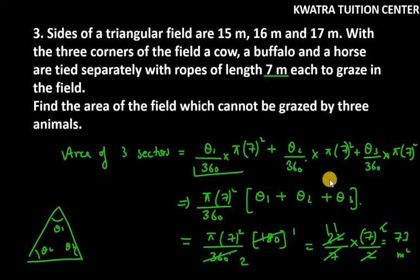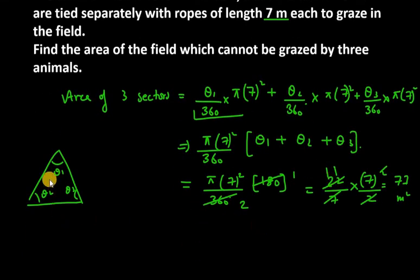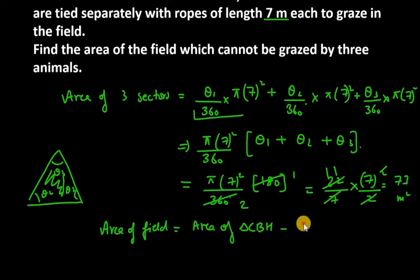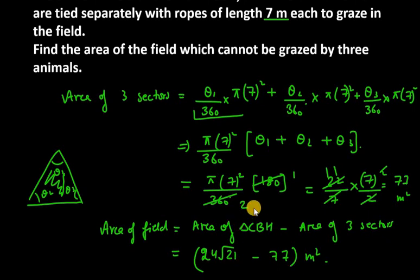Now we have to find area of the field which cannot be grazed. It is equal to area of triangle CBH minus area of 3 sectors. So area of triangle CBH is 24 under root 21 and area of 3 sectors is 77. So this is the answer for question number 3.